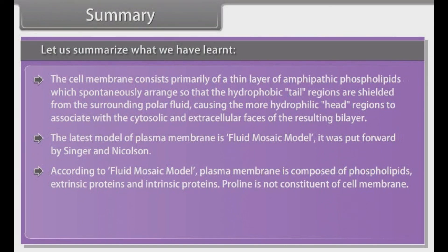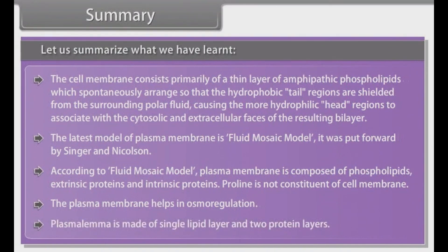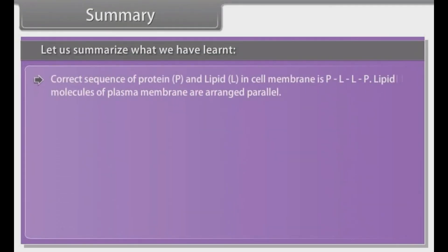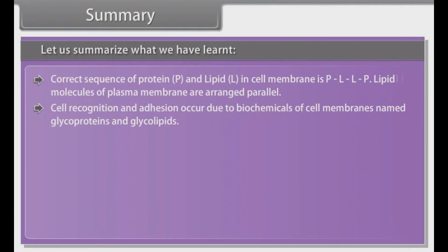Proline is not a constituent of cell membrane. The plasma membrane helps in osmoregulation. Plasmalemma is made of a single lipid layer and two protein layers. The correct sequence of protein (P) and lipid (L) in cell membrane is PLLP. Lipid molecules of plasma membrane are arranged parallel. Cell recognition and adhesion occur due to biochemicals of cell membranes named glycoproteins and glycolipids. Two animal cells are interconnected by desmosome.